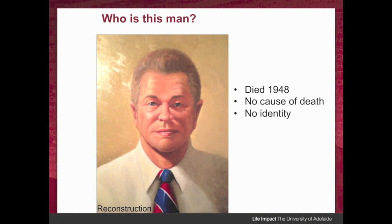What is this case about? It's about a man who was found dead on Somerton Beach, Adelaide, Australia in 1948. To this day it's a mystery. We don't know who he is. We don't know his identity and we don't even know how he died.